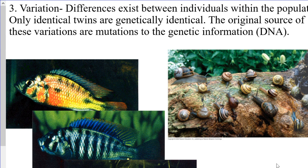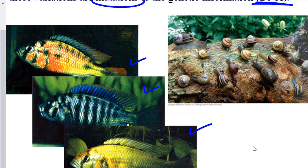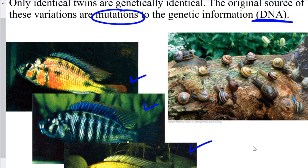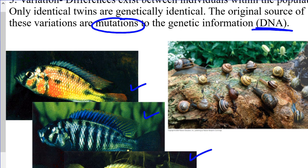There is variation within the population. Unless there is an identical twin, each individual is unique in terms of their genetic information or DNA. The original source of this variation is mutations, and through sexual reproduction, sperm and eggs produced will also be variable, leading to variation in the next generation. The three fish on the left may all be members of the same species but look different because of their genetic makeup — same with the snails at the upper right: they are all genetically unique.